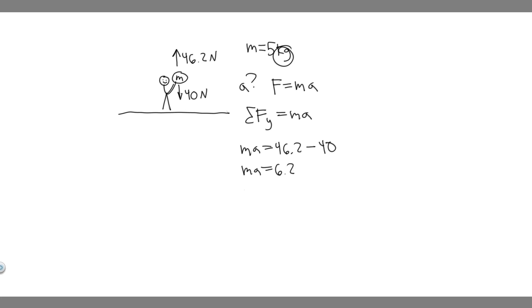And so if we plug in the mass, the mass is 5. So 5 times a is equal to 6.2. And then you can divide by 5 to solve for a. So if you do this, 6.2 divided by 5, you're going to get 1.24.